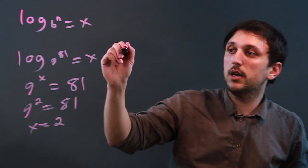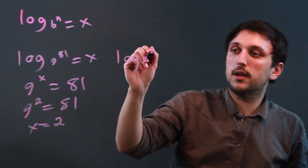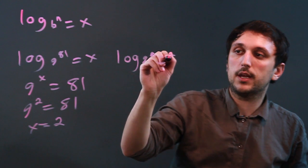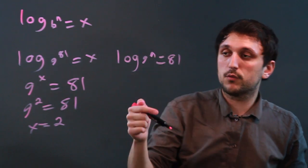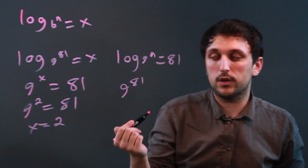If we had it the other way, if we said log base 9 of n equals 81, we'd have to switch it, and we would get 9 to the 81st power, which you don't want to do.